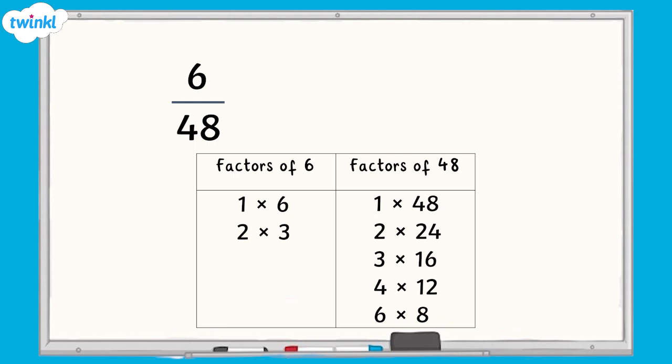The factors for 48 are 1, 2, 3, 4, 6, 8, 12, 16, 24 and 48. And the common factors are 1, 2, 3 and 6. Therefore, the highest common factor for both numbers is 6.